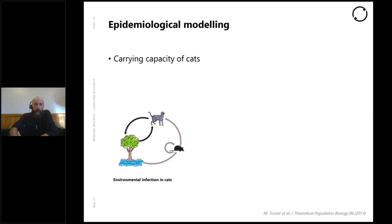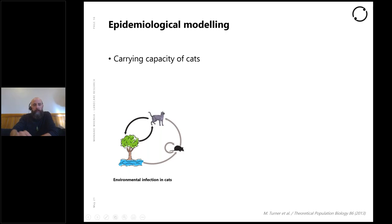Some of the important factors and parameters we need to consider in modeling include the carrying capacity of cats — how many cats can be in an area, their density and abundance. Environmental infection in cats: the more cats that exist in an area, the more infections into the environment, and the increased likelihood that cats will become infected again from the environment. That's the cycle. Understanding carrying capacity and abundance of cats in the wild is very important.